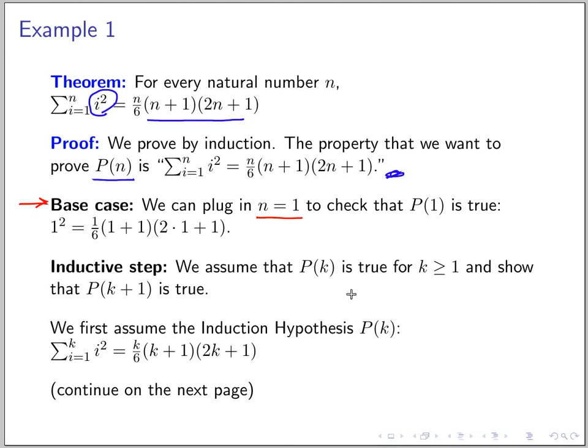Then we need to establish the base case, which is usually easy because it's just a fixed n. In the inductive step, we assume that P(k) is true for some particular k larger than 1, and then we want to show that this implies that P(k+1) is true. This has to be true for any k.